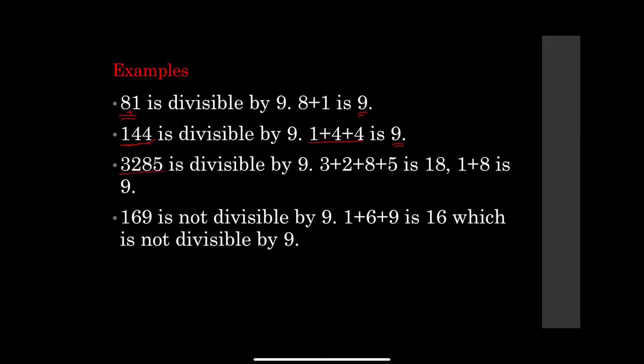3,285 is divisible by 9. Why? 3 plus 2 plus 8 plus 5 equals 18. And we know that 18 is divisible by 9. But if we want to continue again because we have two digits, 1 plus 8 equals 9.